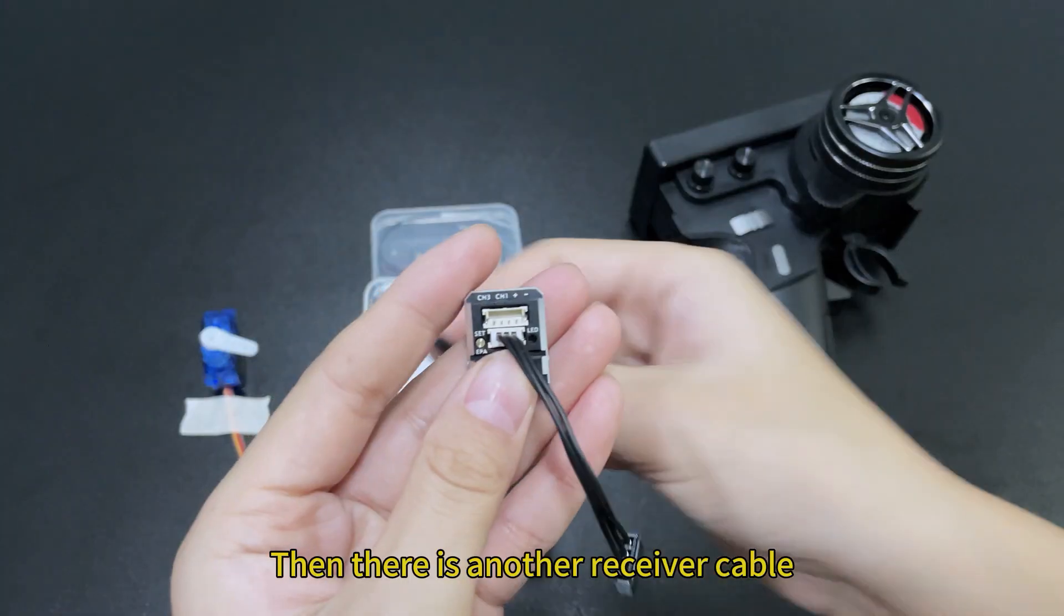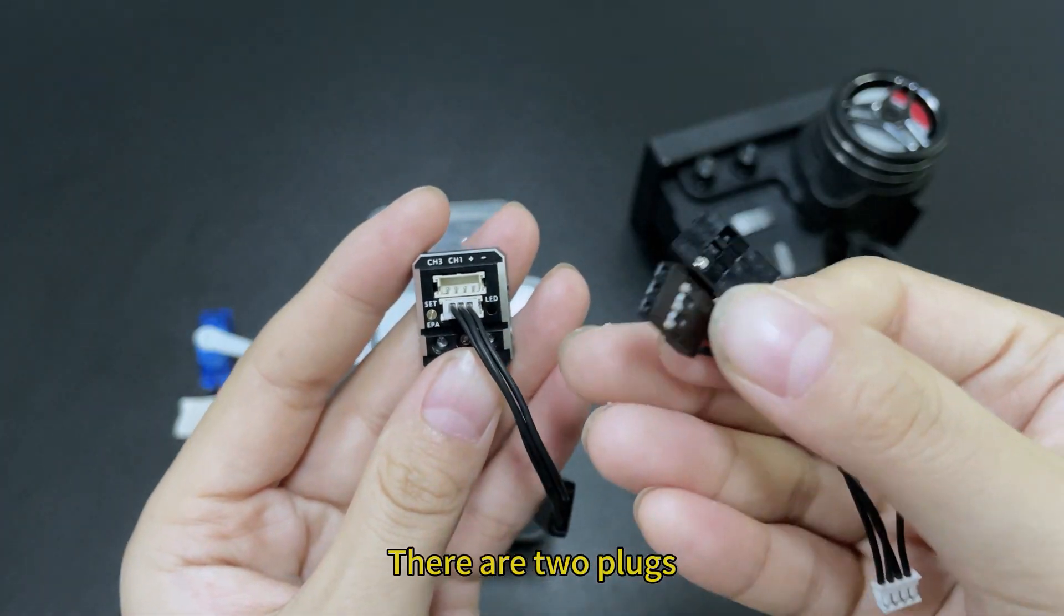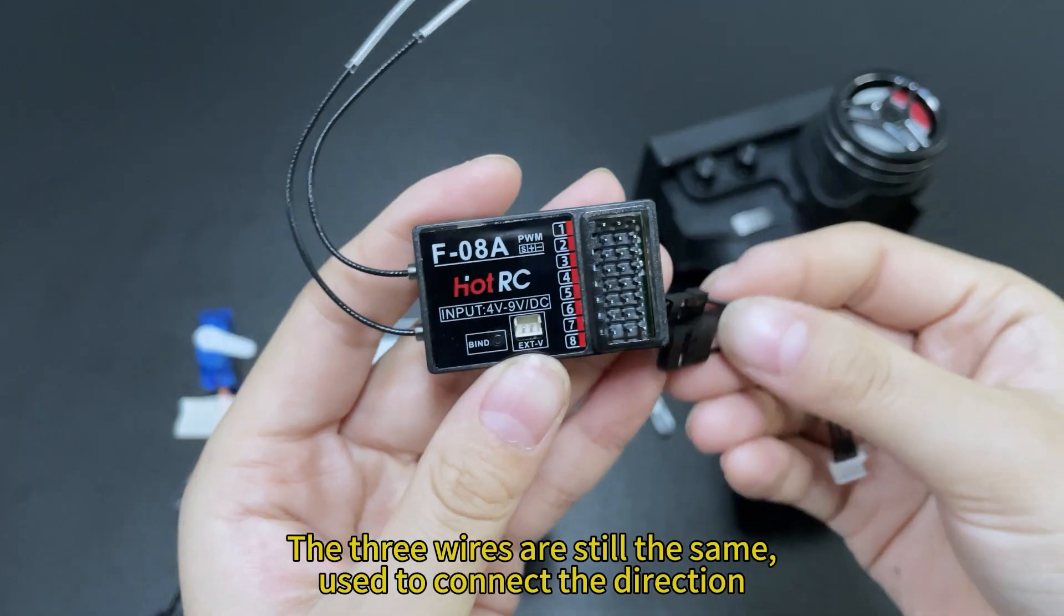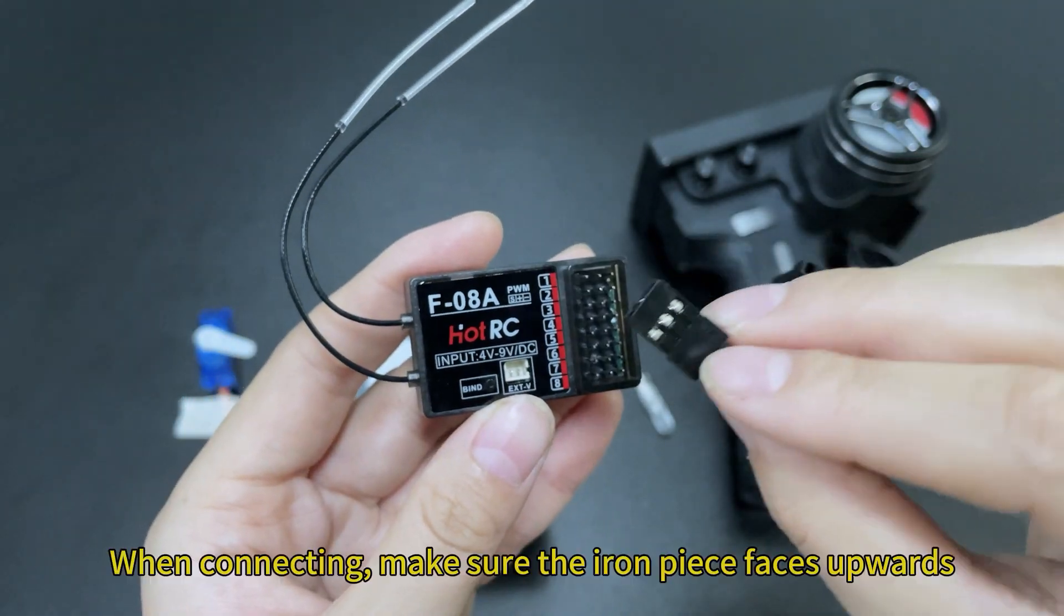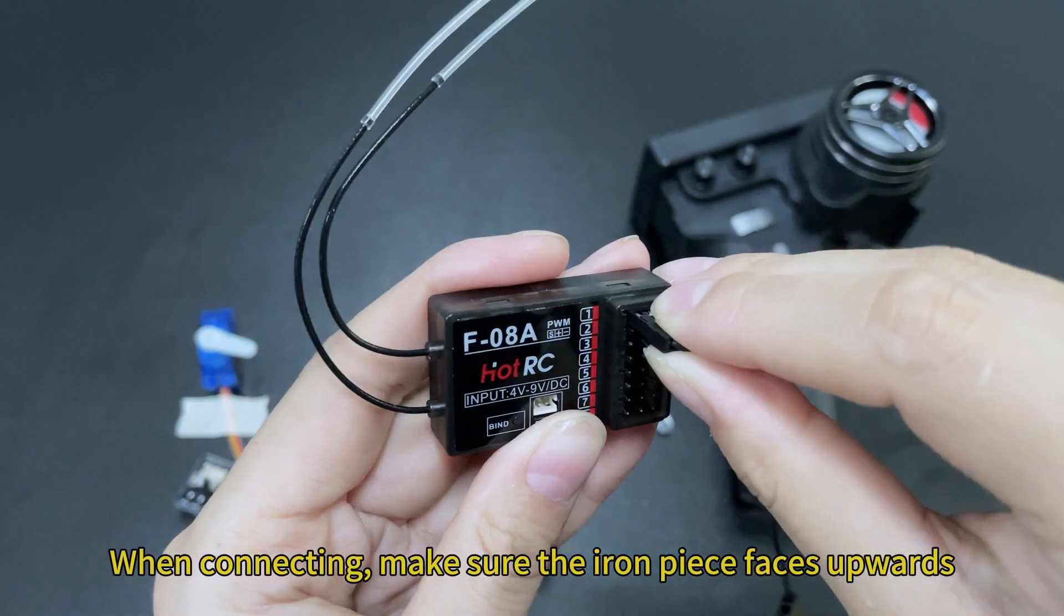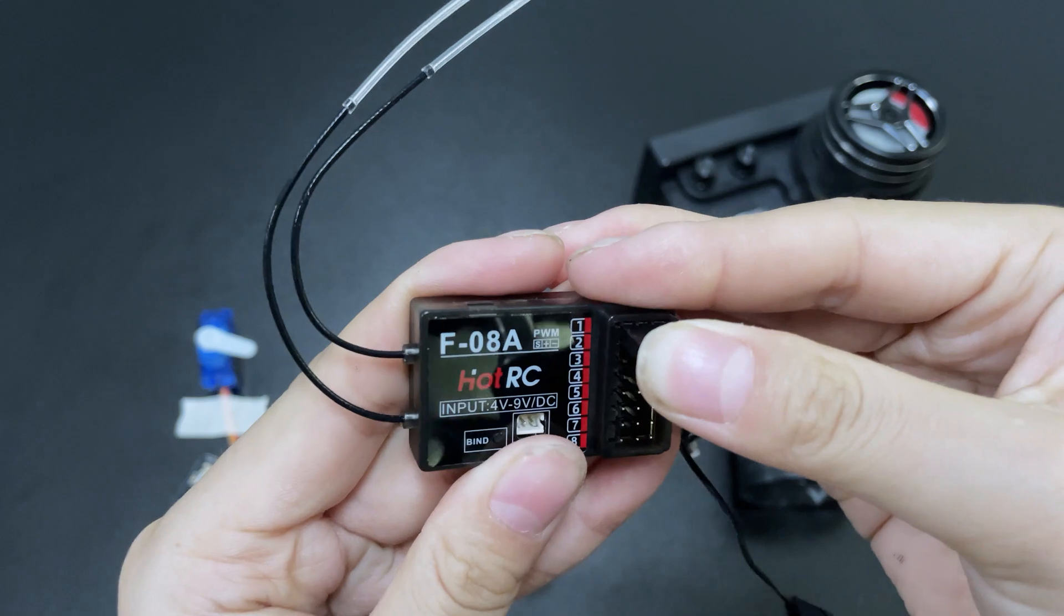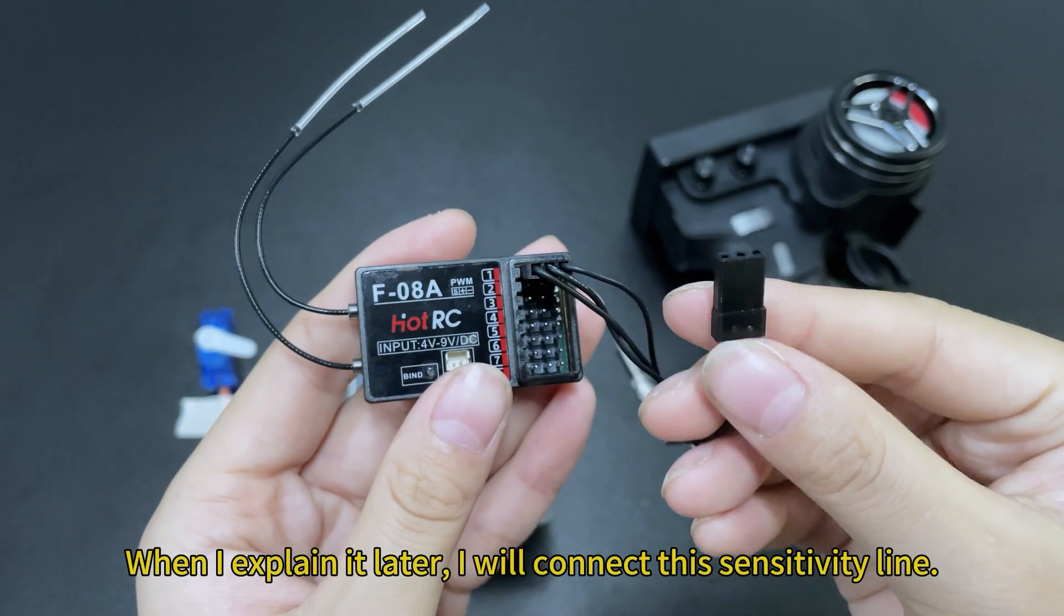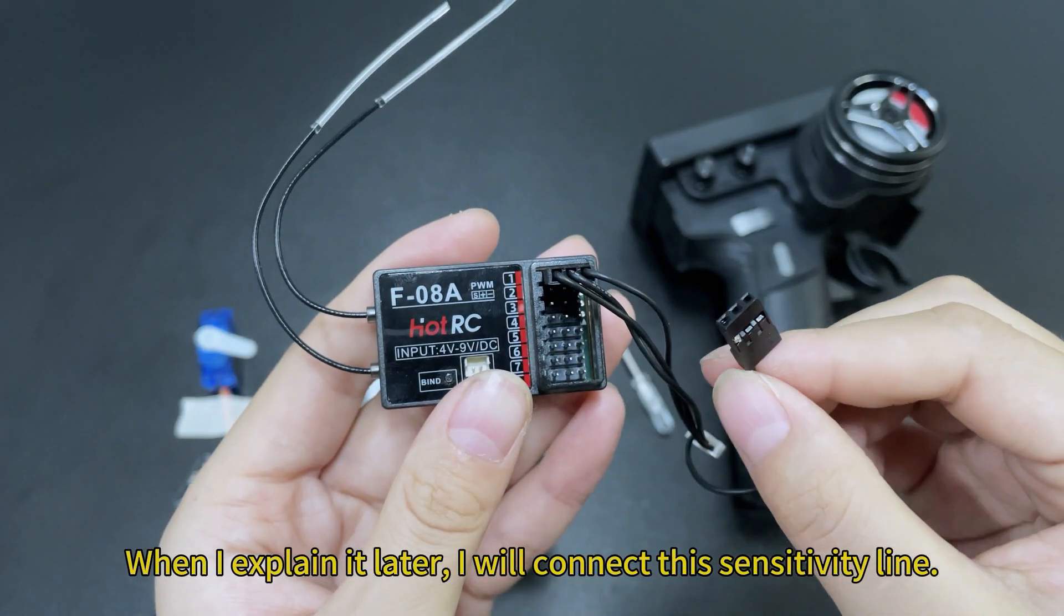Then there is another receiver cable. There are two plugs. The three wires are still the same used to connect the direction. When connecting, make sure the iron piece faces upwards. Single wire for controlling sensitivity. When I explain it later, I will connect this sensitivity line.